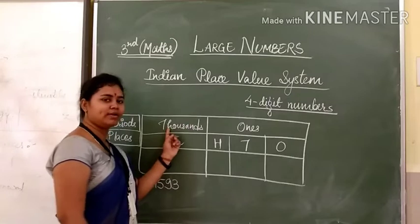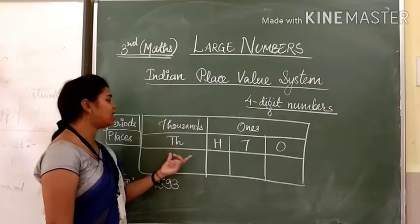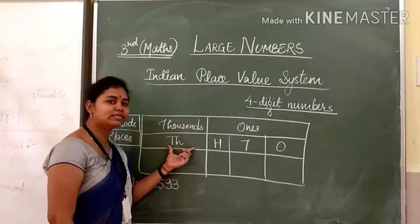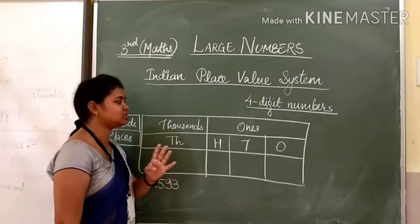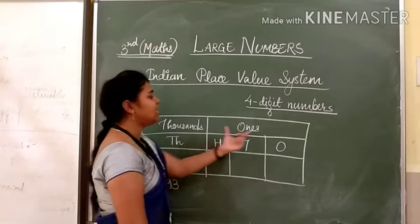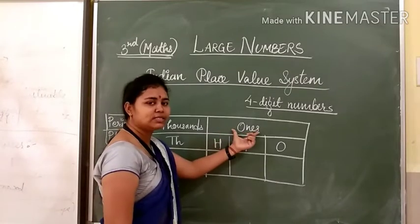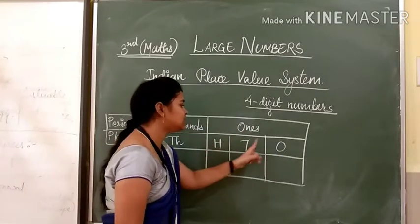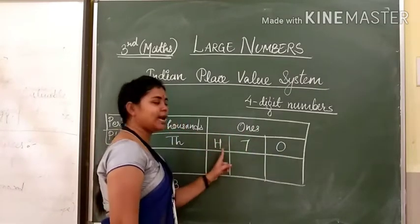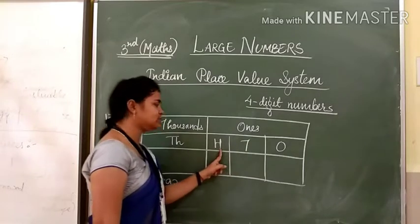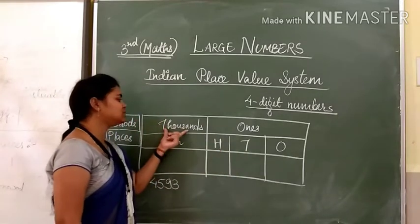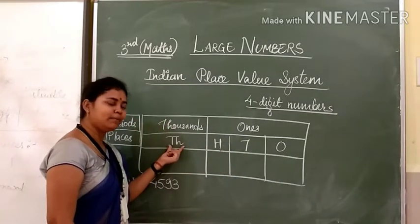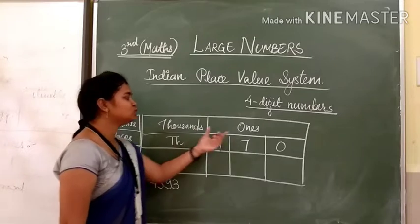In these 2 periods, there are 4 places. 4 places means 4 digits will be used. In the 1s period, there are 3 places: 1s, 10s, and 100s. And in the 1000s period, there is 1 place, that is the 1000s place.